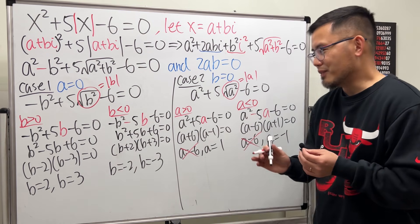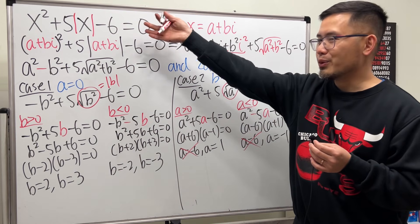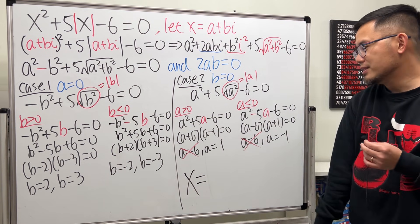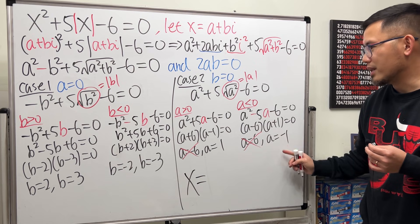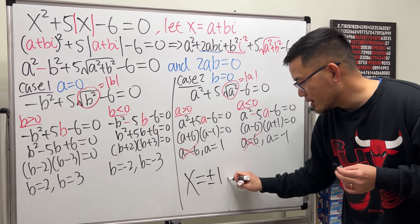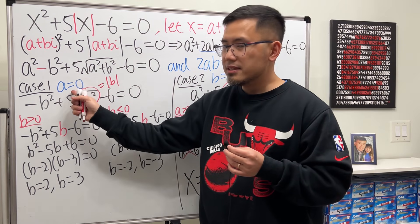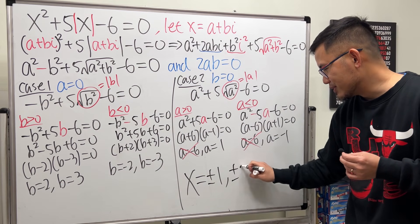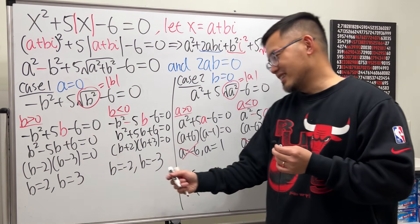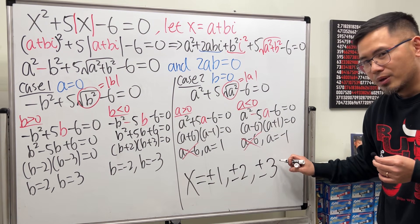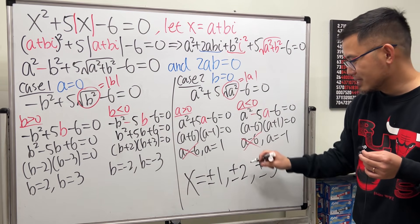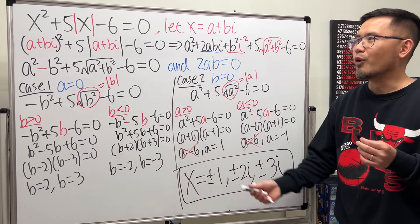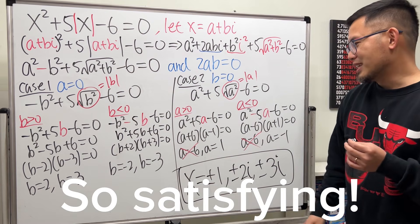So as you can see, we have all these choices. Finally, though, I will have to tell you what x is. Ladies and gentlemen, x is equal to. We have two real solutions. And that's when a is equal to 1 or negative 1. And that's when b is equal to 0. So we have plus or minus 1. Secondly, when a is 0, we get a purely imaginary solution. 2 and negative 2. So let's put on plus or minus 2. And then finally, 3 and negative 3. Well, these are the b values. That's the complex part. I almost forgot the i and i. Ladies and gentlemen, here are the 6 solutions for that equation. So satisfying. That's it.